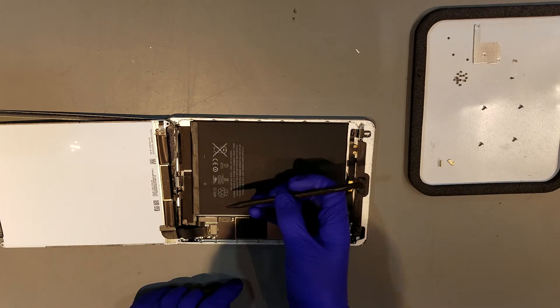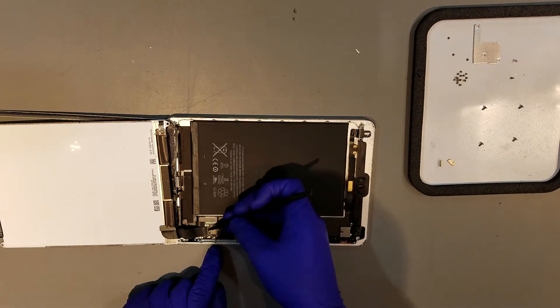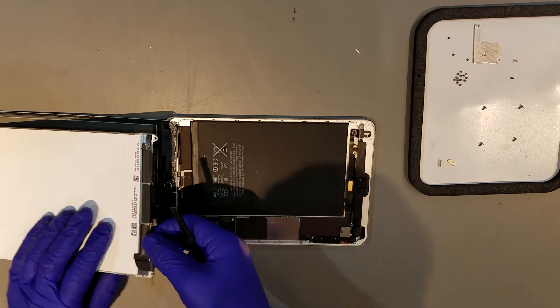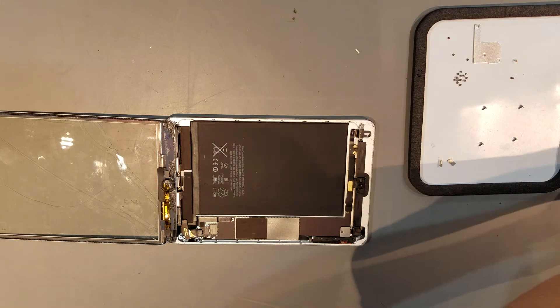Once the shield has been removed, the LCD can then be unclipped and removed as well. Once the LCD has been unclipped, I like to lay it on a cloth to make sure that it's not damaged.